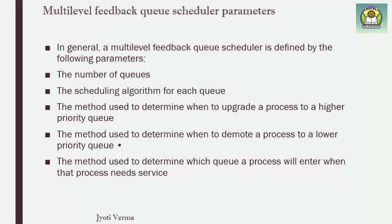The criteria used to define a multi-level feedback queue scheduler include: the number of queues, the scheduling algorithm for each queue, the method used to determine when to upgrade or degrade a process, and the method used to determine which queue a process will enter when it needs service.